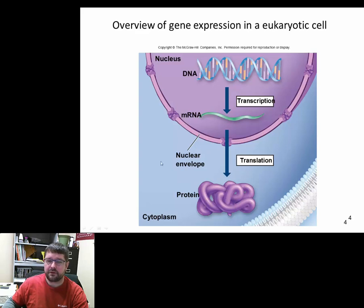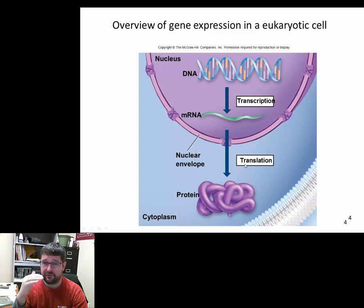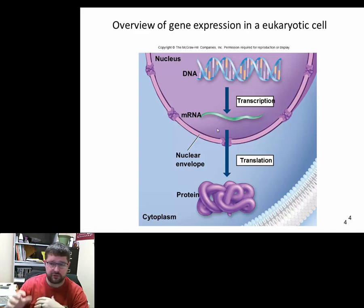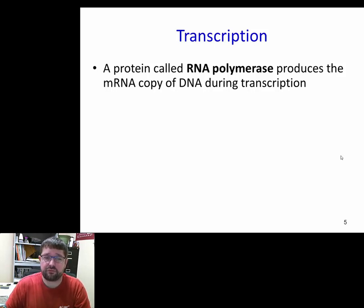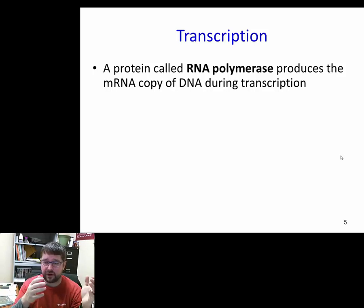That messenger RNA leaves the nuclear envelope through the nuclear pore. It encounters ribosomes in the cytoplasm, or if there's an endoplasmic reticulum with ribosomes associated with it, it'll encounter the ribosomes there. Then it lays down the amino acids in the specific order dictated by the messenger RNA strand. Those amino acids can then fold and twist to form the protein — in this case, lactase.